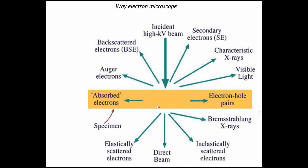When an incident high-kV beam hits the sample, some part will be absorbed and some part directly transmitted. This transmitted beam is utilized in UV-visible spectroscopy to find out absorption. Some part will be elastically scattered — without any change in energy — which is Rayleigh scattering. If the beam is absorbed and re-emitted inelastically, meaning there is a change in energy, that is Raman scattering and related phenomena.